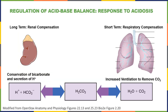So in response to acidosis, the long-term mechanism in the kidneys will be to conserve bicarbonate and secrete hydrogen ions, whereas the short-term mechanism in the lungs will be to increase the pulmonary ventilation rate to stimulate an increase in the rate of carbon dioxide excretion. Together, the urinary and respiratory systems can work to increase the blood pH, restoring pH homeostasis and preventing acidosis.